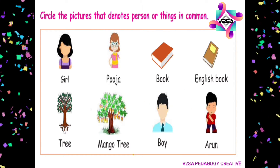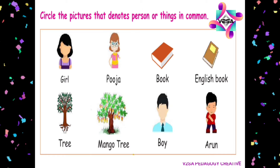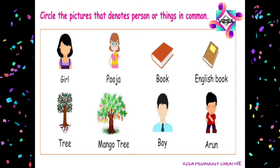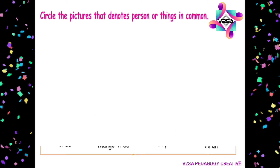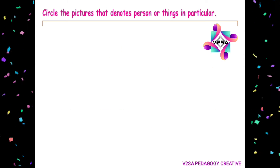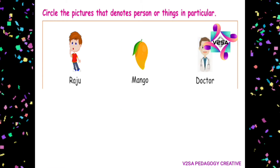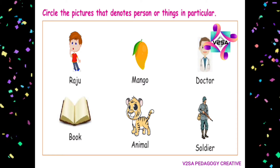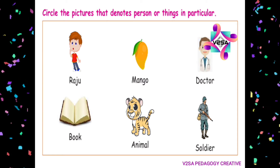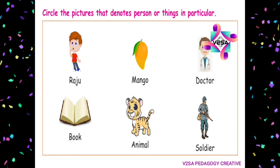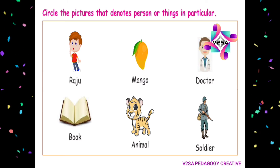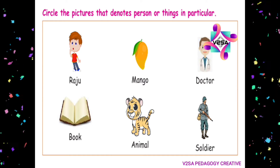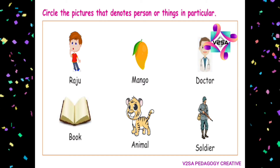Arun — circle the pictures that denote persons or things in particular. Raju, Mango, Doctor, Book, Animal, Soldier. Persons and things are over there. That is a proper noun.